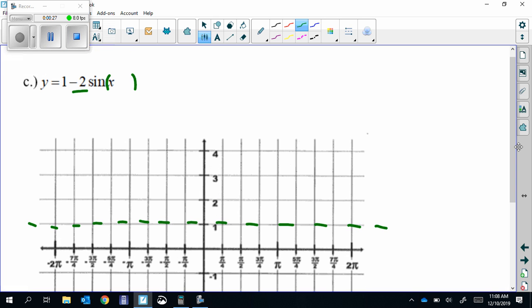Since there's nothing changing the period, there's no B to change the period. The period is 2π, which is 1, 2, 3, 4, 5, 6, 7, 8 units divided by the 4 quadrants is 2 units per quadrant.